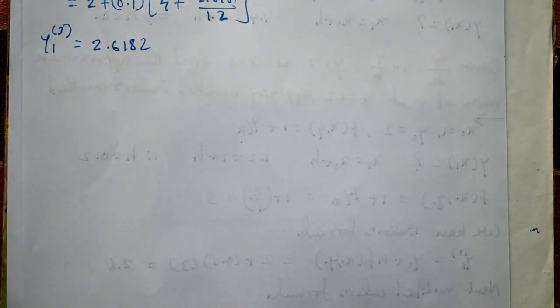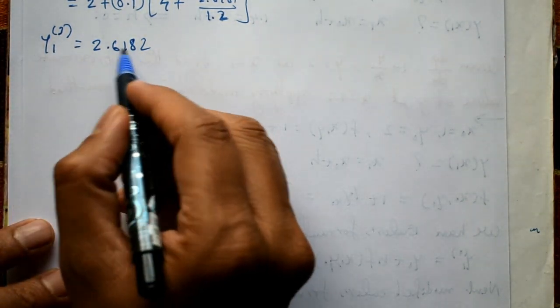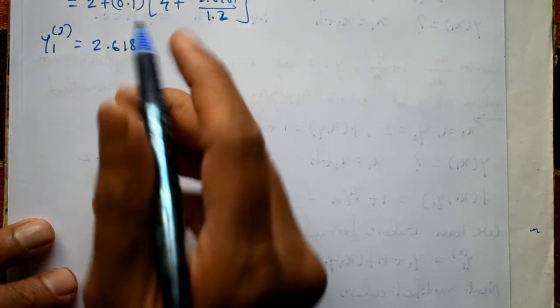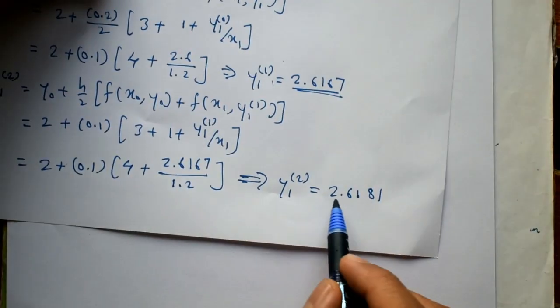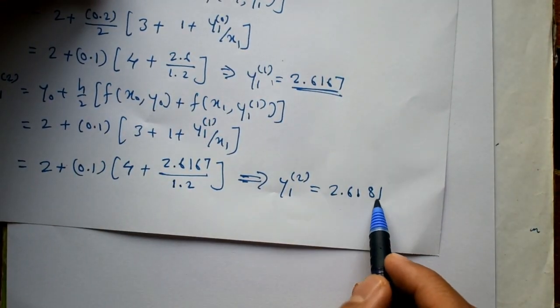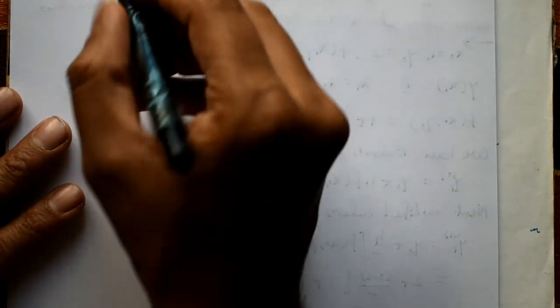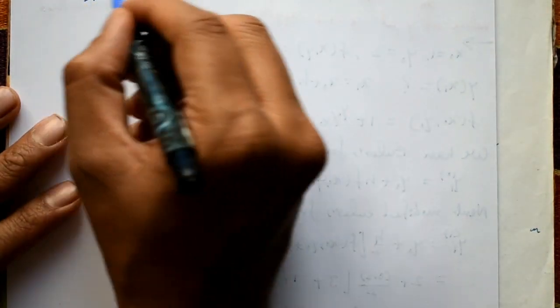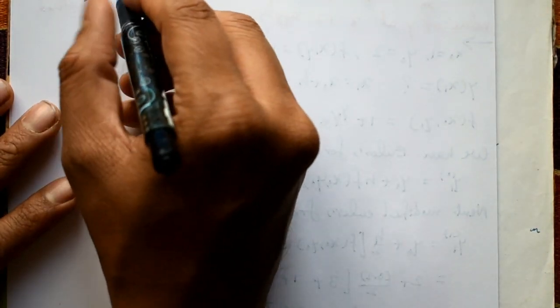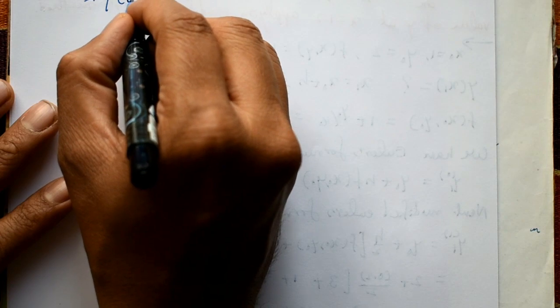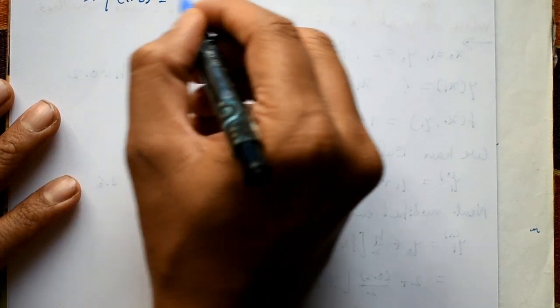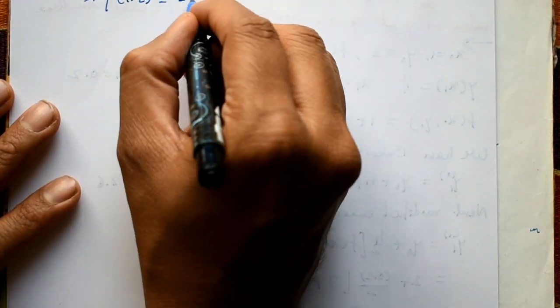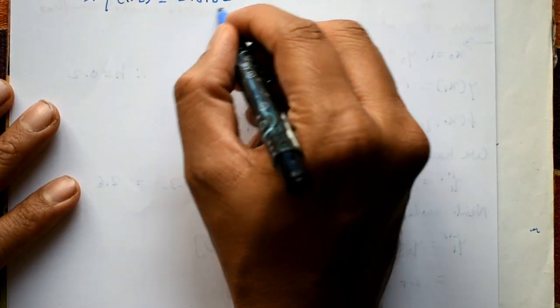Checking the last two iteration values: 2.6182 and 2.6181 — only the last digit changes, which means this is the final answer. The last two approximation values are essentially the same. The required solution is y of 1.2 equal to 2.6182.